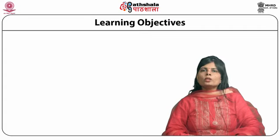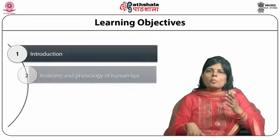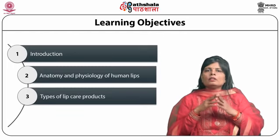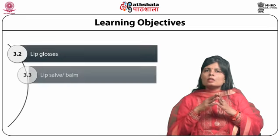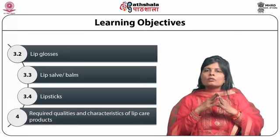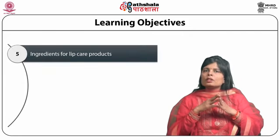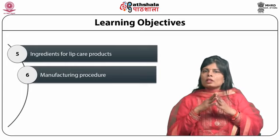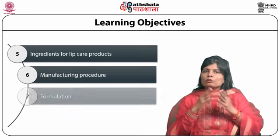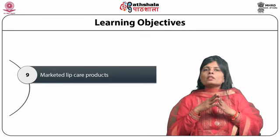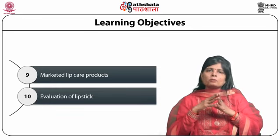The objective of this module is to make you understand about the anatomy and physiology of human lips, the types of lip care products which are lip liners, lip glosses, lip salve or balm, and lipsticks. We will also cover the required qualities and characteristics of a lip care product, the ingredients, the manufacturing process, formulation, packaging, marketing of lip care products, and evaluation parameters for lipsticks.